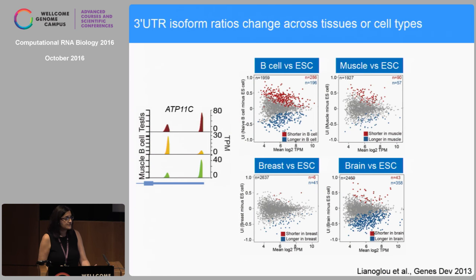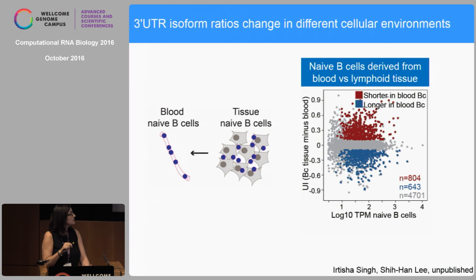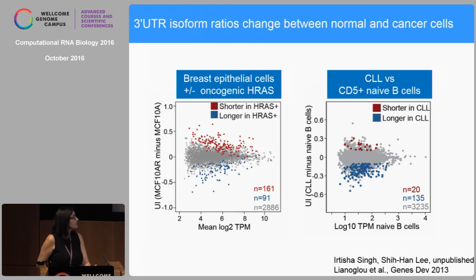3' UTR isoforms are not static. If we compare 3' UTR ratios of different tissues, we see that 3' UTR isoform expression is highly cell-type specific, but it's also influenced by the environment. If we take naive B cells — which do not proliferate and can migrate between lymphoid tissues and peripheral blood — and harvest them from these two compartments and perform 3' Seq, we see that hundreds of genes can change their 3' UTR isoform expression. Of course, 3' UTRs can also be different in cancer — we used non-transformed breast epithelial cells where we overexpressed oncogenic RAS, and a few hundred genes changed 3' UTR isoform expression.